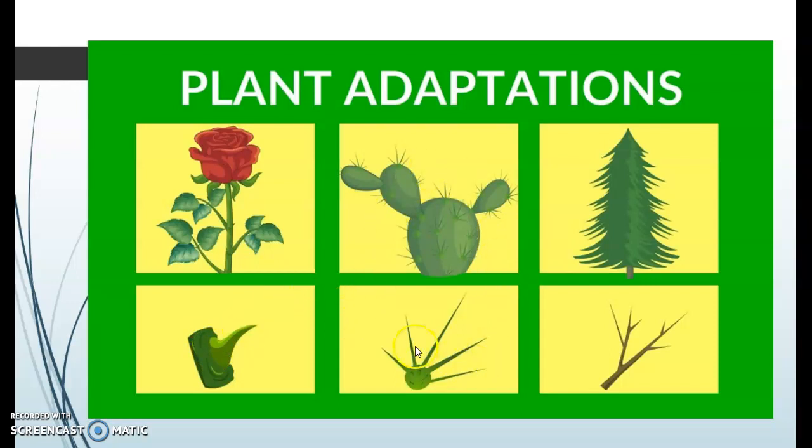The cactus has spines for two reasons. The first one is to protect itself from being eaten by an animal, and the second one is to keep the water or store the water that it has in deserts where water is pretty scarce.